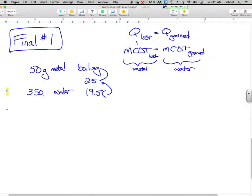So if I'm looking for the specific heat of the metal, I'm looking for that, so the M and the delta T need to move and come down underneath. So I'm going to have the C of the metal, it's going to be the MC delta T of the water divided by the M and the delta T of the metal.